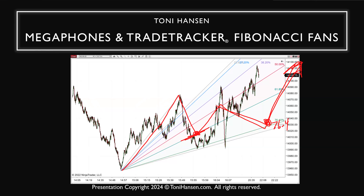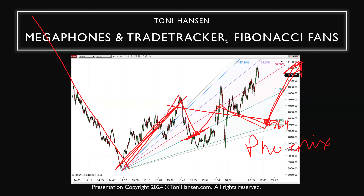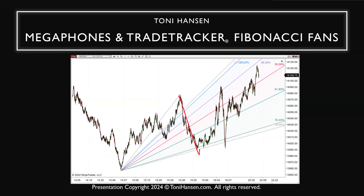A more common way I would use this: price comes up then creates a nice two-wave correction — first wave into the 61.8%, second wave into 76.4%. This is a lower risk, higher probability entry on the upside. You'll find that's easier to recognize as a newer or novice trader just starting to use fibonacci fans. And this zone, if it was a downtrend prior, would be what I call a phoenix — your first correction in a new uptrend, rising from the ashes. You can also use it as a bull flag zone, and use it as a target level if you took a reversal off the high.